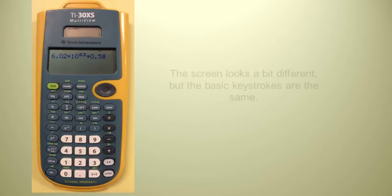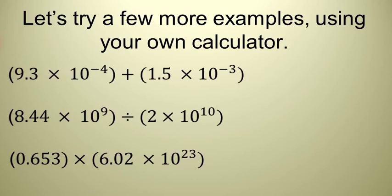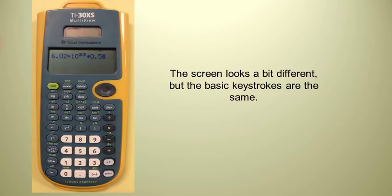And when you do that, you should get the same answer. This is what it looks like when you type in that problem in your screen. And so that's the same answer. You should get 3.02 or 3.01 times 10 to the 23rd.